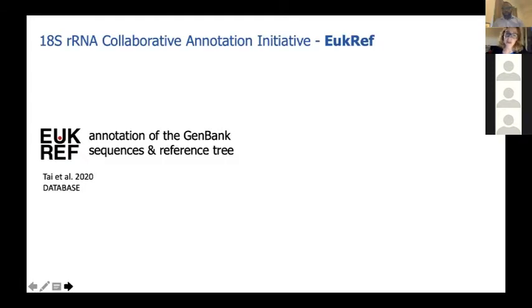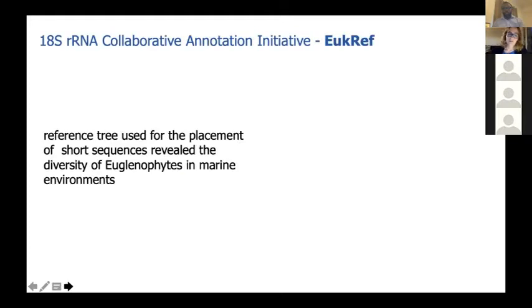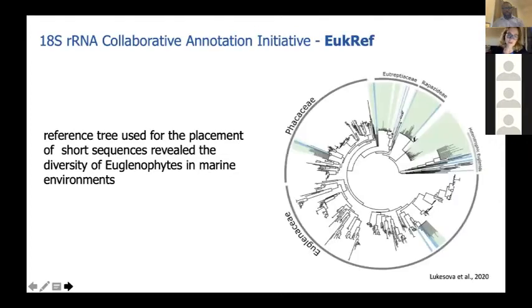This reference tree is very useful for the placement of short sequences coming from large expeditions such as Tara. Here is an example — we used Tara sequences and placed them on this reference tree to reveal the diversity of euglenophytes in marine environments. Not surprisingly, the largest diversity is in known marine genera such as Eutreptiella or Eutreptia. But there are also some lineages previously known only as freshwater taxa that may also be present, although rarely, in marine environments.